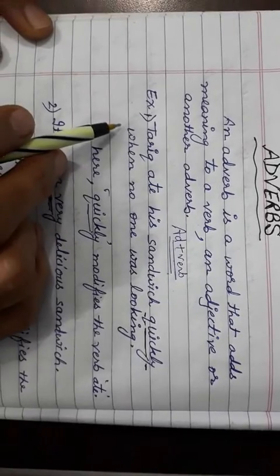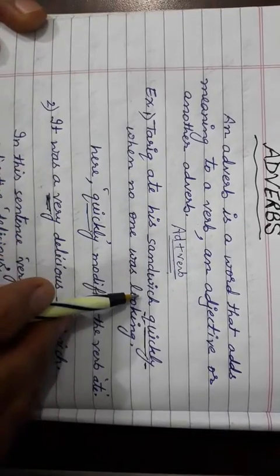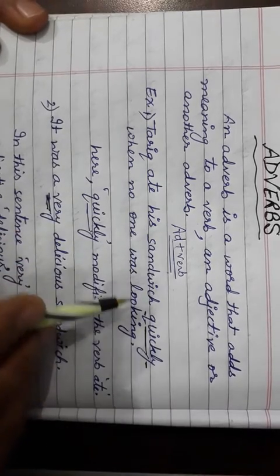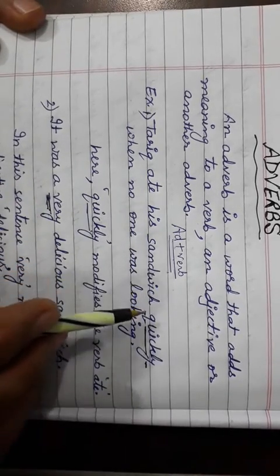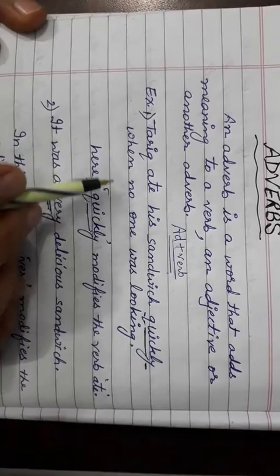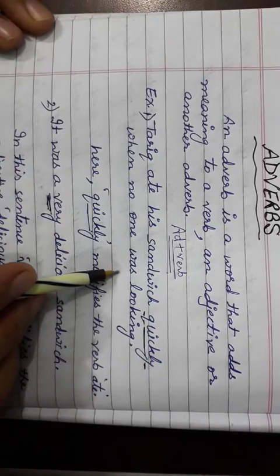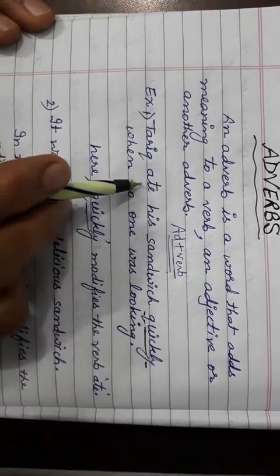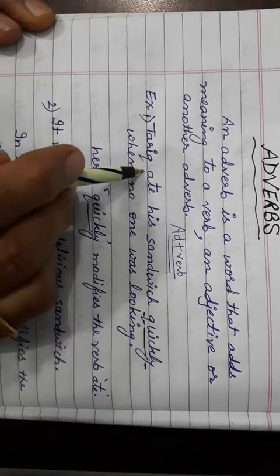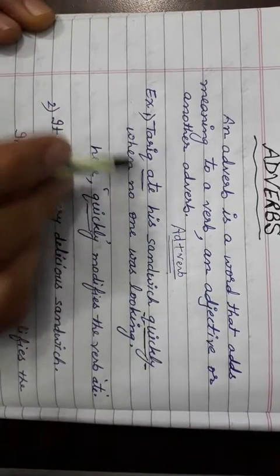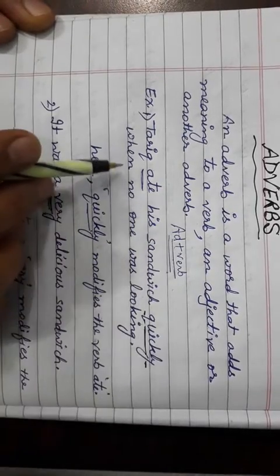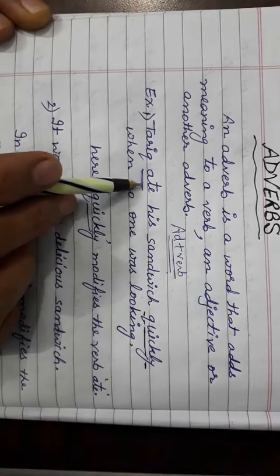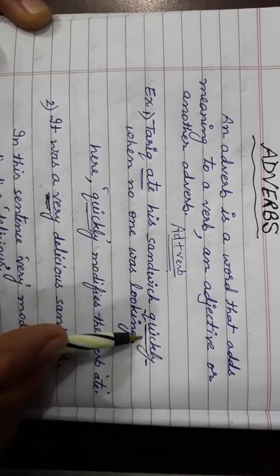Example: Tariq ate his sandwich quickly when no one was looking. So here, quickly modifies verb ate. Quickly word modified ate word. So quickly is an adverb.